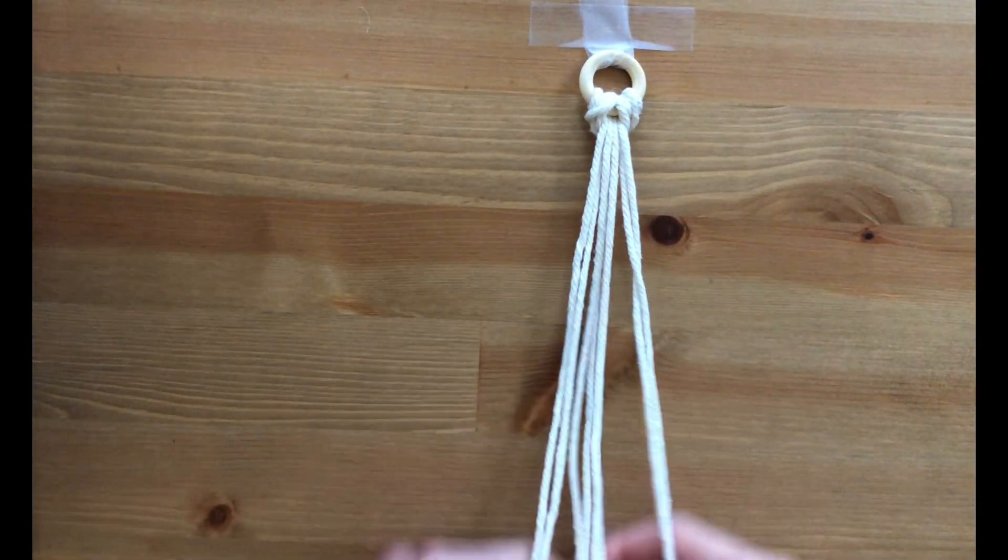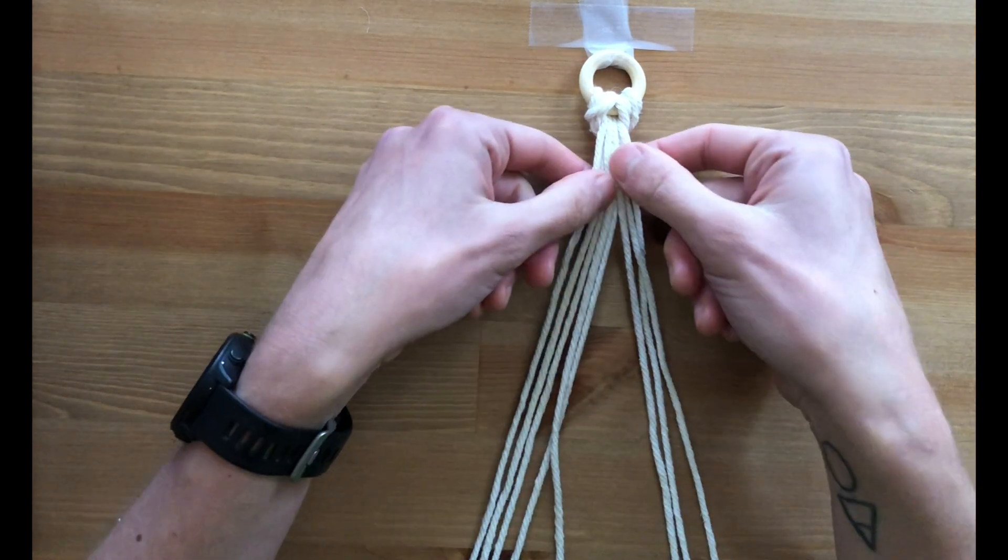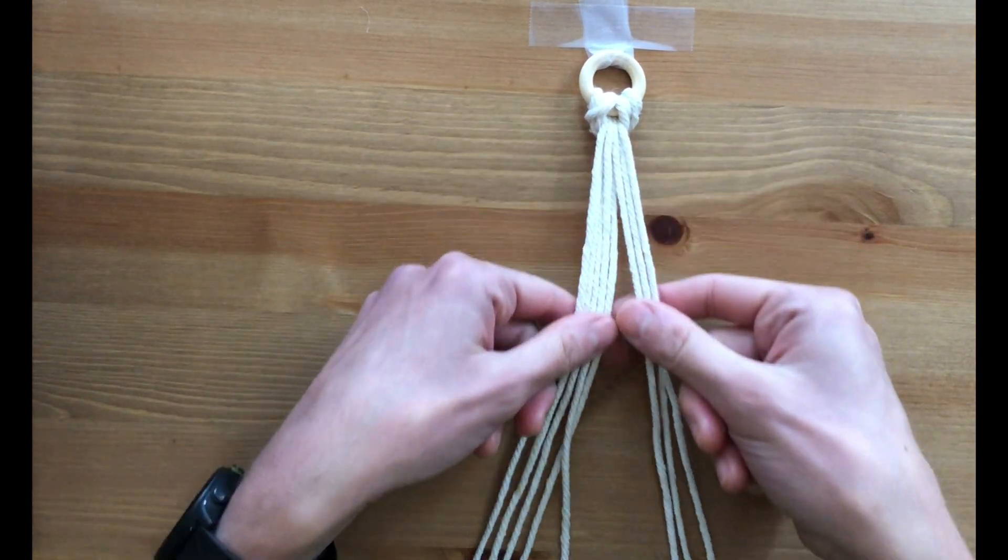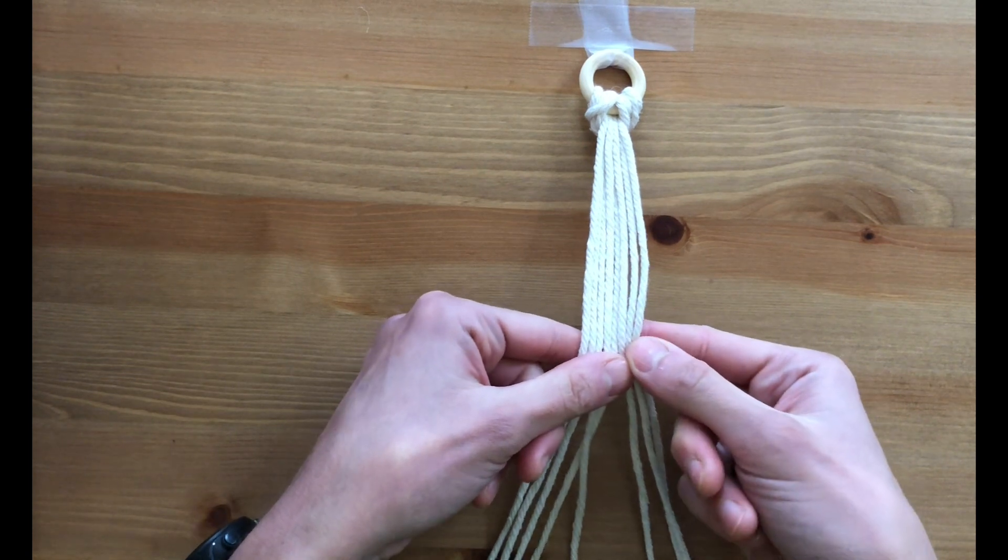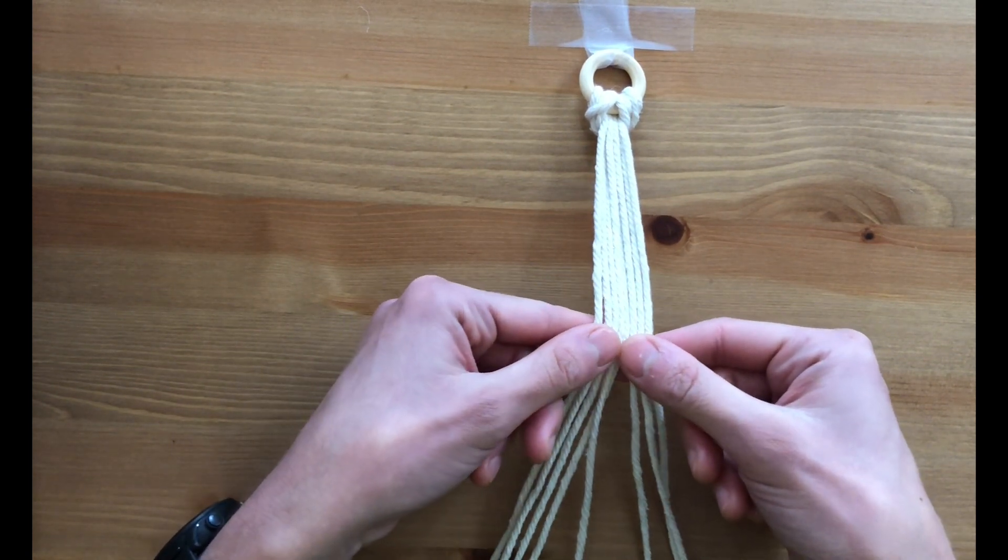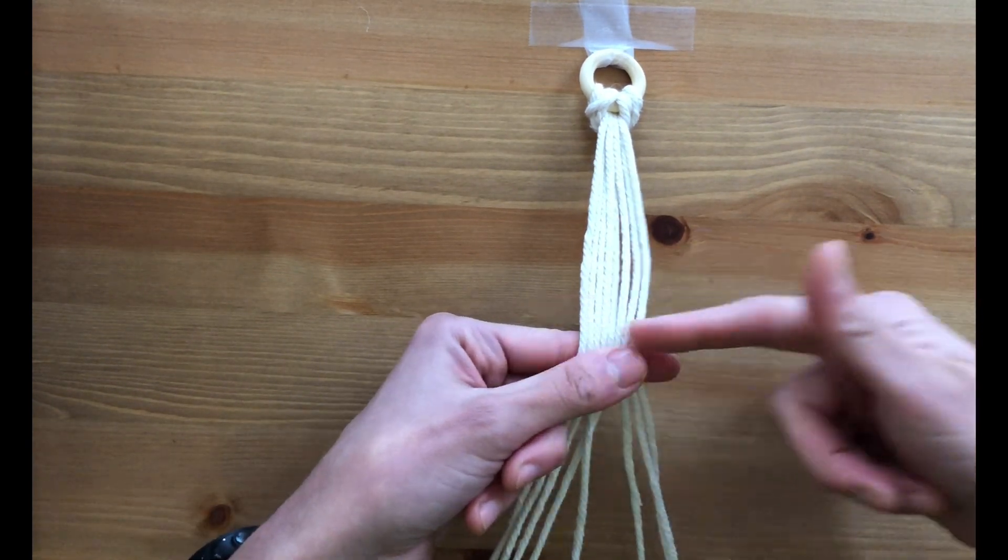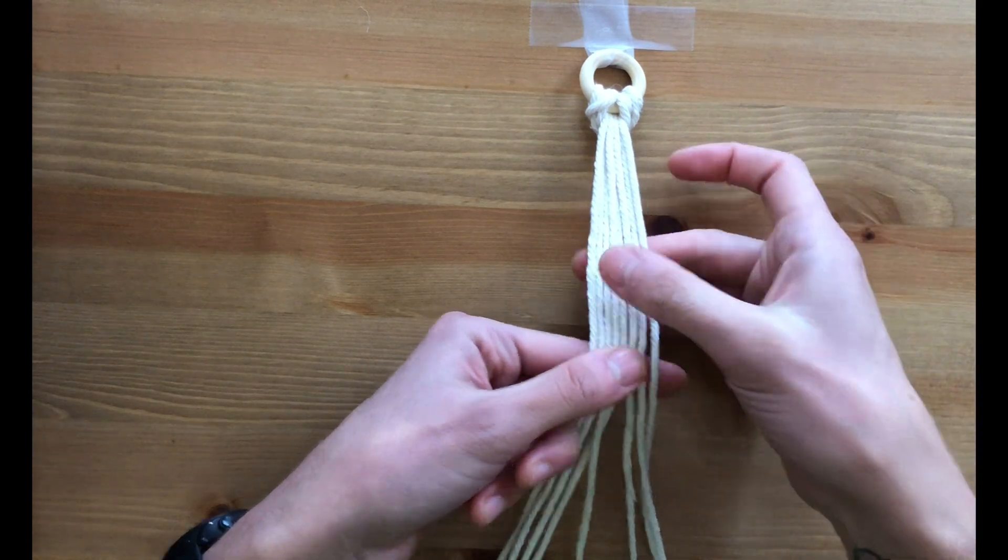Okay, so you have your eight strings, and we're going to make the first set of knots. I'm going to make them about this far down. It's up to you how far you want to make them. You just want to make sure each row of knots has to be at the same level-ish.